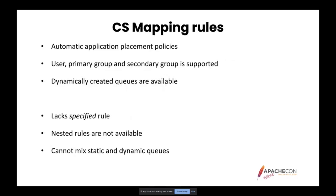Just like in FAIR Scheduler, Capacity Scheduler also has a feature to automatically place applications into queues, called mapping rules. However, its approach is a bit different — the format is entirely different, but user, primary, and secondary replacement are supported, and there is a possibility to use dynamically created queues. However, it lacks the 'specified' rule equivalent, doesn't have nested rules, and dynamic queue creation behaves differently.